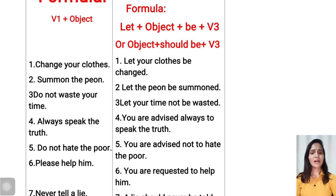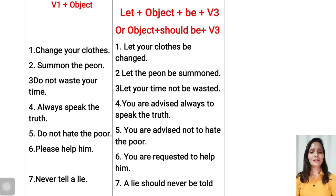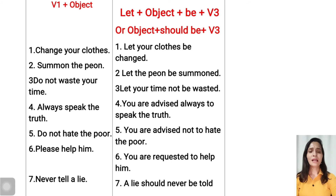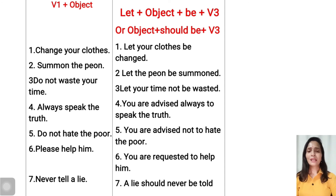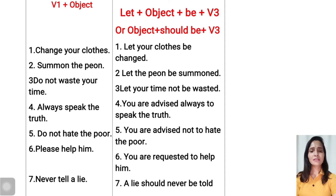Next example: 'Always speak the truth' — this is advice. When there is advice, we write 'You are advised' first, then use 'always', then 'to', and write the verb as it is: 'speak the truth'. Don't write the third verb of speak here because we have already used Verb 3 'advised'. So the passive voice is: You are advised always to speak the truth.